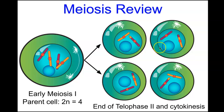As a meiosis review: if this were taking place in the testes with spermatogenesis occurring, all four of those cells would become spermatozoa. However, in the female ovaries, only one of these cells would become the mature ovum. The other three, due to unequal division of the cytoplasm, become smaller cell types called polar bodies, which disintegrate.